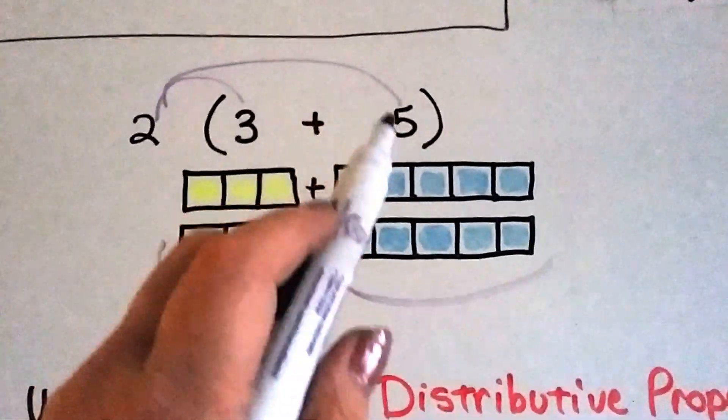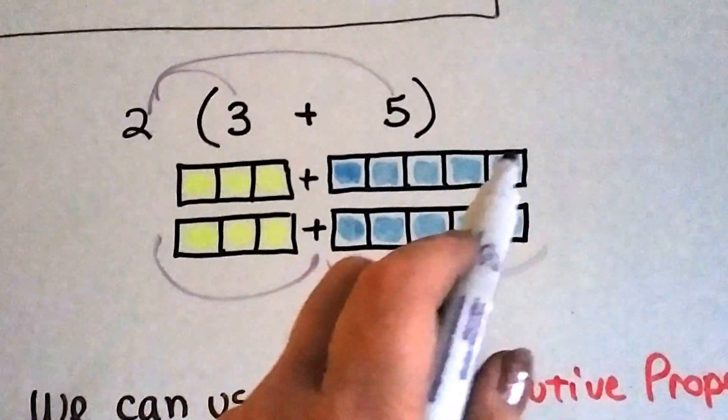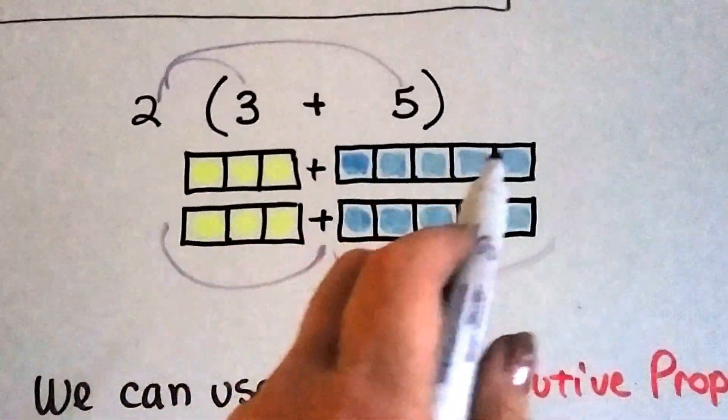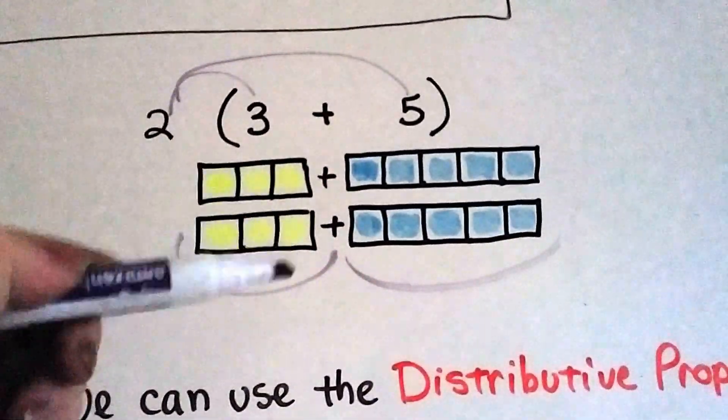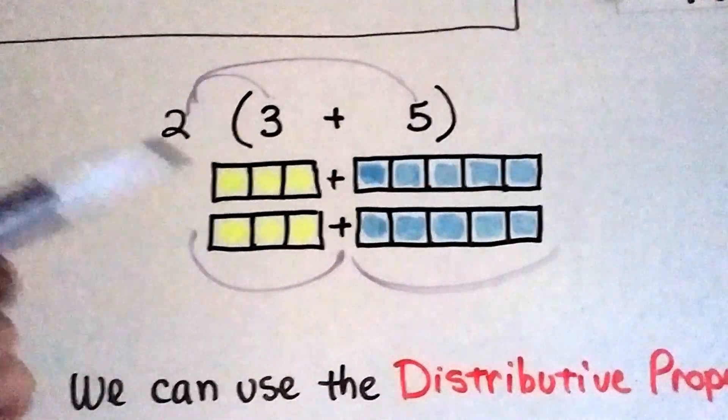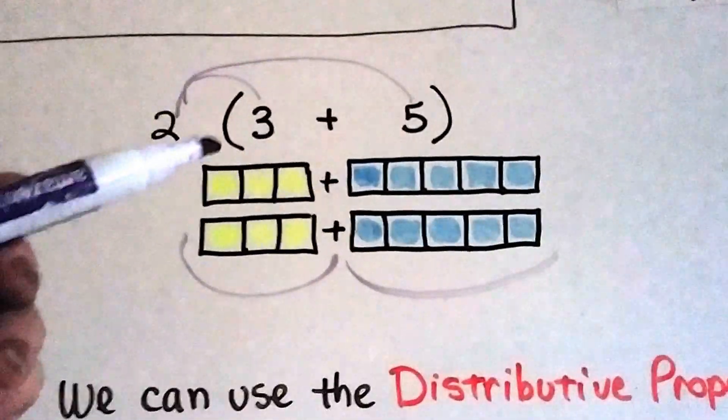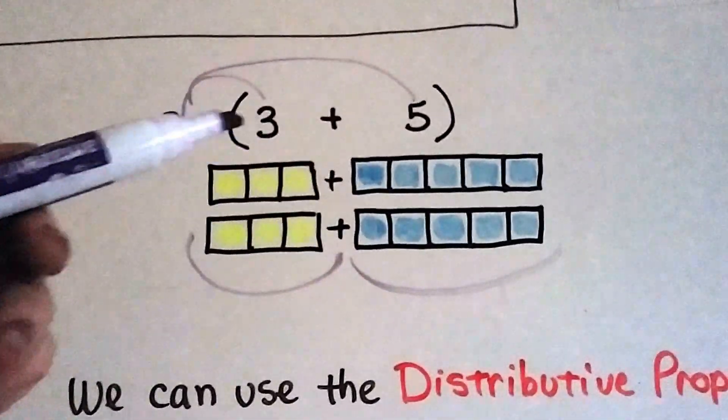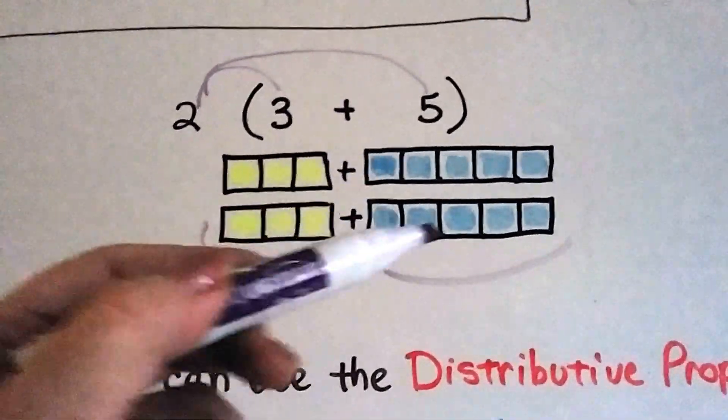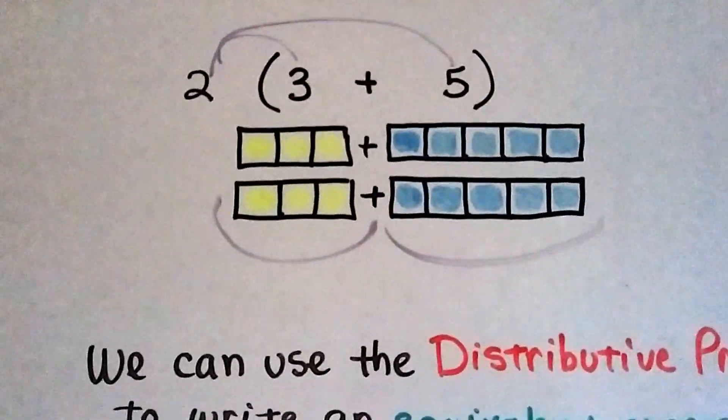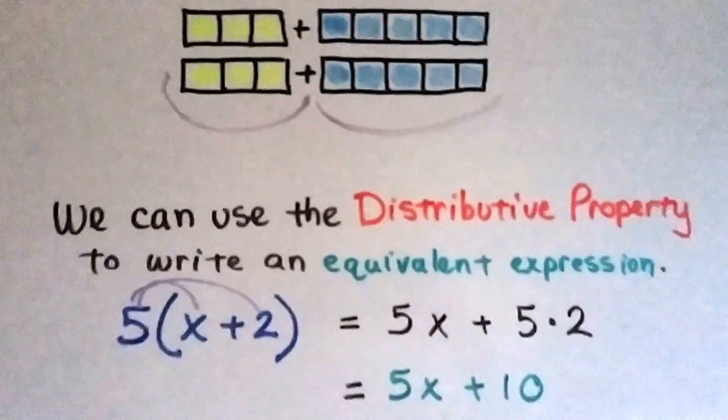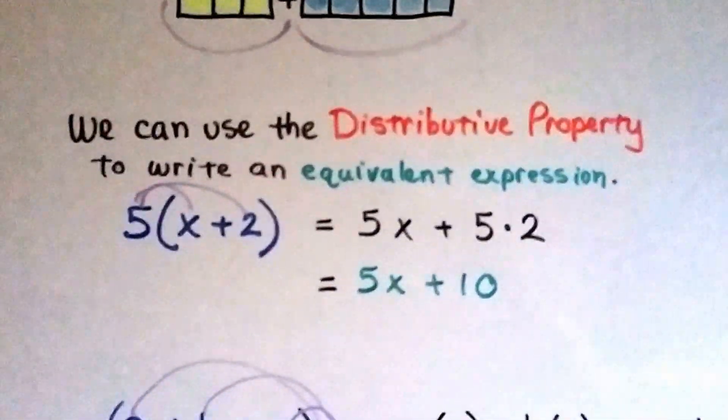And even if we did it with order of operations and added this first and said this 5 and that 3 make an 8 and we have 2 eights, that's 16, we're going to get the same answer. But if we just took the parentheses away and did 2 times 3 is 6 plus 5, we would have lost one of the 5's, wouldn't we? So we can use the distributive property to write equivalent expressions.